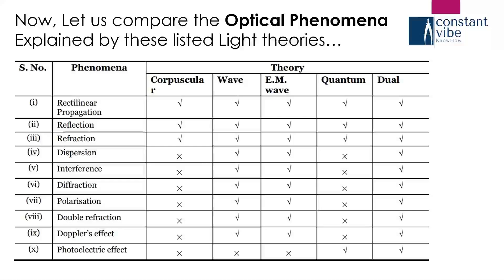All these light phenomena, we are comparing with the different theories of light: the corpuscular theory, wave theory, EM wave theory, quantum theory, and dual theory of light. This is only the brief explanation you can see in the table.